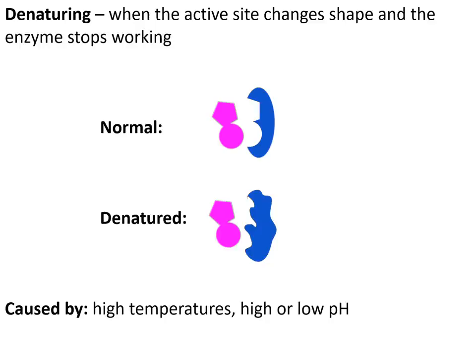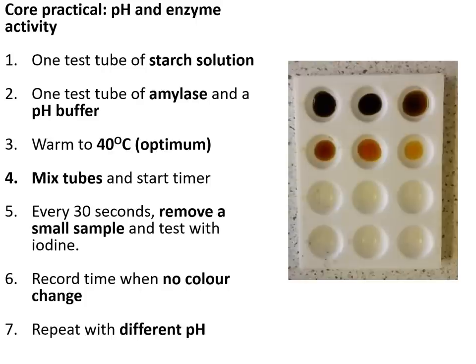Enzymes can be denatured. Normally the active site of an enzyme has the matching shape for the substrate. However, sometimes the active site changes shape so it no longer fits the substrate, stopping the enzyme from working. This can be caused by high temperatures and very high or very low pH.